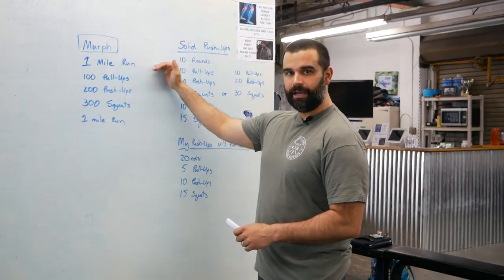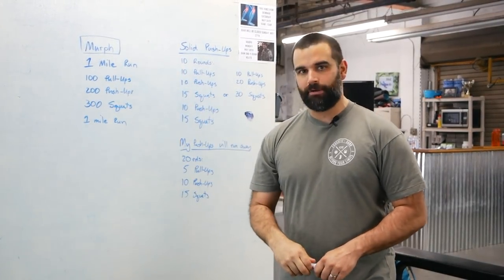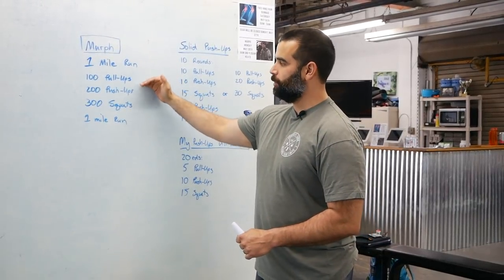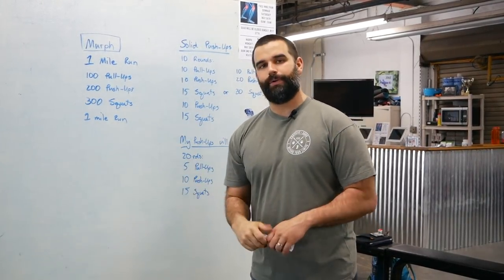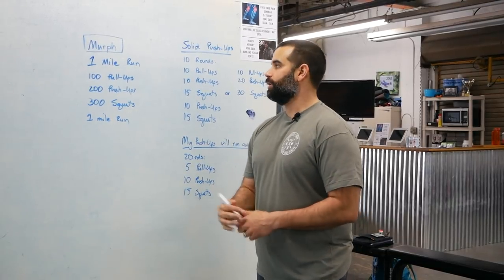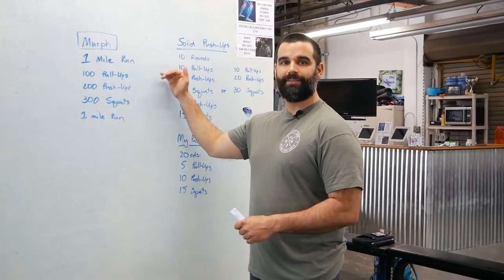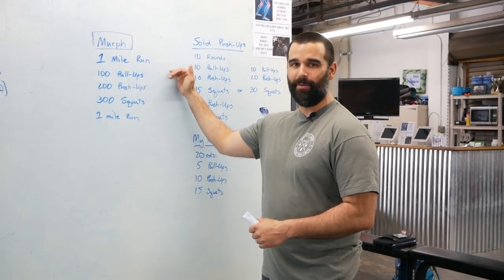The first mile run, you don't have to go out there and PR your mile, but you also shouldn't be running slow. Attack this. Because once we get into those pull-ups, push-ups, and squats, we know we're going to slow down. It's going to happen. So don't feel like you need to pace this mile a lot. On the same token, don't feel like you should go out there and PR because it's not going to go well afterwards.